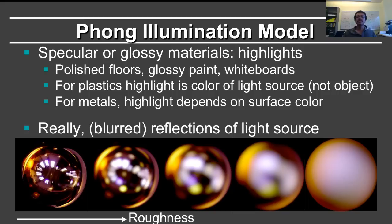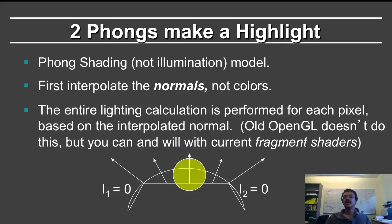And it's also possible to regard them really as blurred reflections of the light source. If you look at the bottom panel, you can consider that the light source is just being blurred out as you go from left to right. So Phong illumination coupled with Phong shading is the appropriate way to make highlights. And again, it's worth noting the distinction between these. They're commonly used together, but technically they're different aspects.